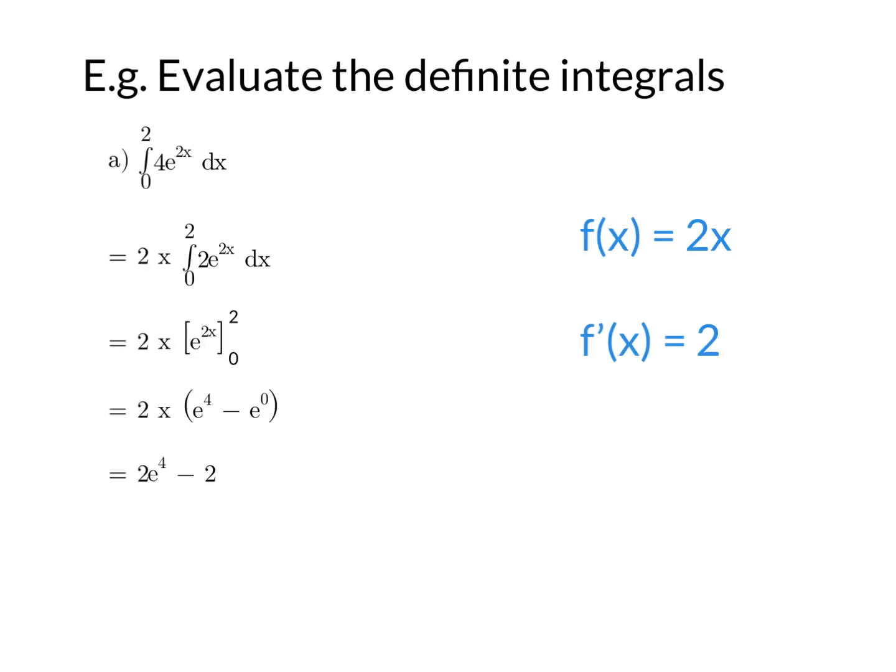So the integral of 0 to 2 of 4e to the 2x. Once again, we'll put the fx over the side. So fx is 2x. f dash of x is 2. Well, I've got 4 in front of e to the 2x, and I only need 2, so I've got twice as much. So I'm going to put 2 times 2, so the 2 times out the front, so that it leaves me with 2e to the 2x being integrated. So 2e to the 2x integrates to e to the 2x between 0 and 2, subbing the values 2 and 0, and you get e to the 4 minus e to the 0. And if you expand brackets, you get 2e to the 4 minus 2, because e to the 0 is 1.